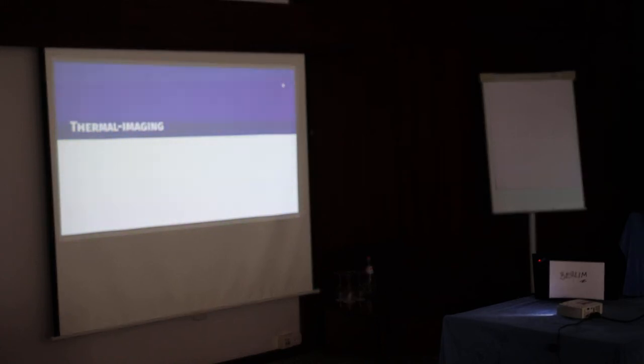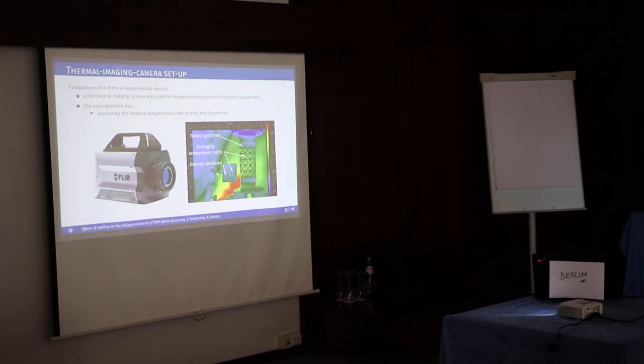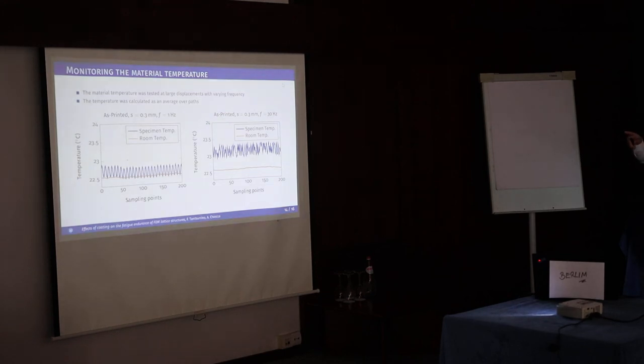What we're doing right now are some analyses with thermal imaging camera to help us understand better. We're using a thermal camera and we have a dummy specimen. We're designing some paths where we average the temperature on the specimen - of course the external temperature. We're doing some temperature measurements. We did this once for an as-printed specimen without coating. Here you can see the temperature fluctuation in blue on the specimen surface, and the orange is the room temperature that we monitor through the dummy specimen. This is because the temperature can change and we need to know the change in room temperature.